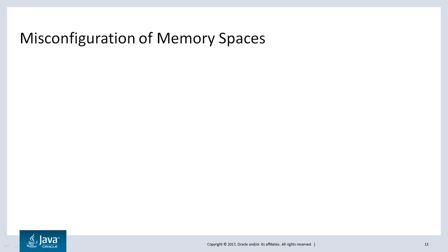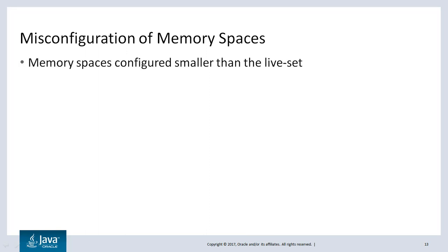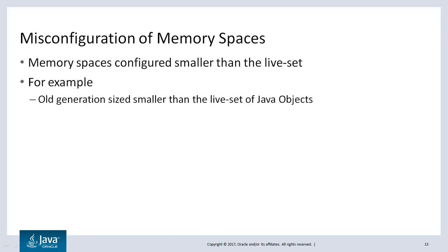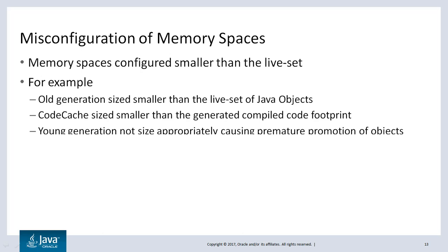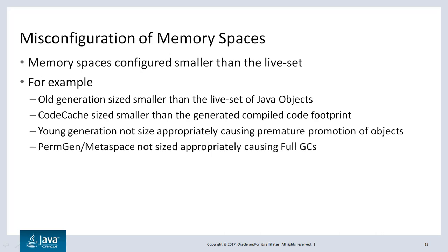Misconfiguration of memory spaces. If the memory pools are sized smaller than the live set of that pool, the application can get into memory issues. Some examples are: if the old generation is sized smaller than the live set of Java objects, or the code cache is sized smaller than the generated compiled code, or if the young generation is not sized appropriately it can cause premature promotion of objects leading to full GCs, or the perm gen or metaspace are not sized appropriately causing full GCs. All of these misconfigurations ultimately lead to performance or out of memory issues for the application.